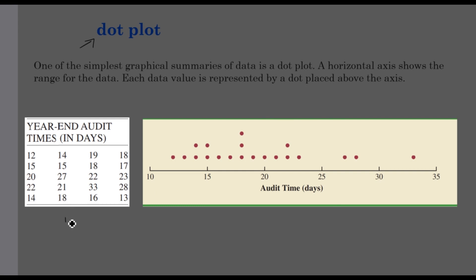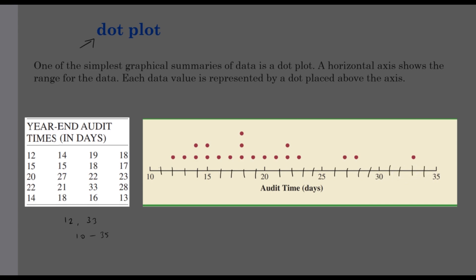Our values range from 12 to 33, so our axis goes from 10 to 35. We make a number line and an axis. We mark values: 10, 11, 12, 13, 14, 15, 16, 17, 18, 19, 20, 21, 22, 23, 24, 25, 26, 27, 28, 29, 30, 31, 32, 33, 34, 35. Now we place dots above the axis for each data value — 12 appears 1 time, 13 appears 1 time, and so on up through 33.